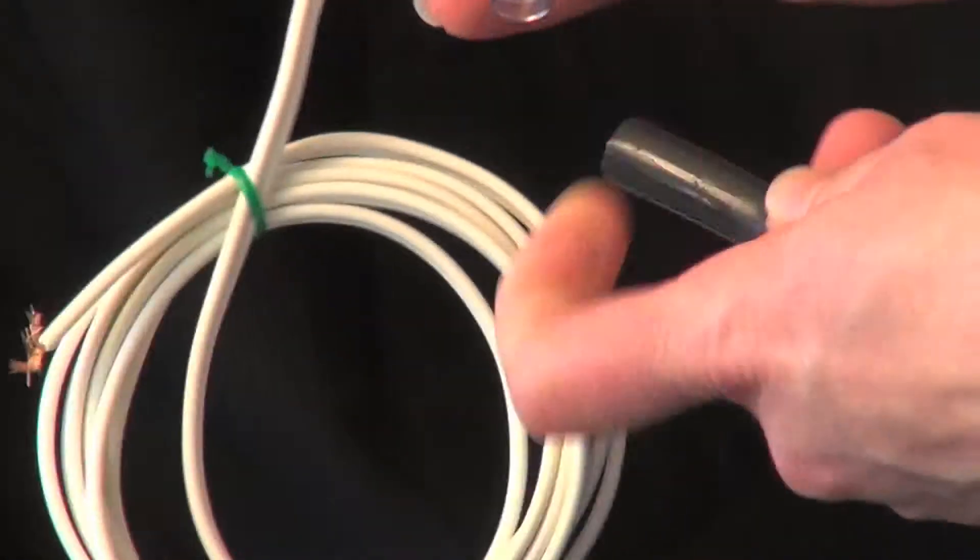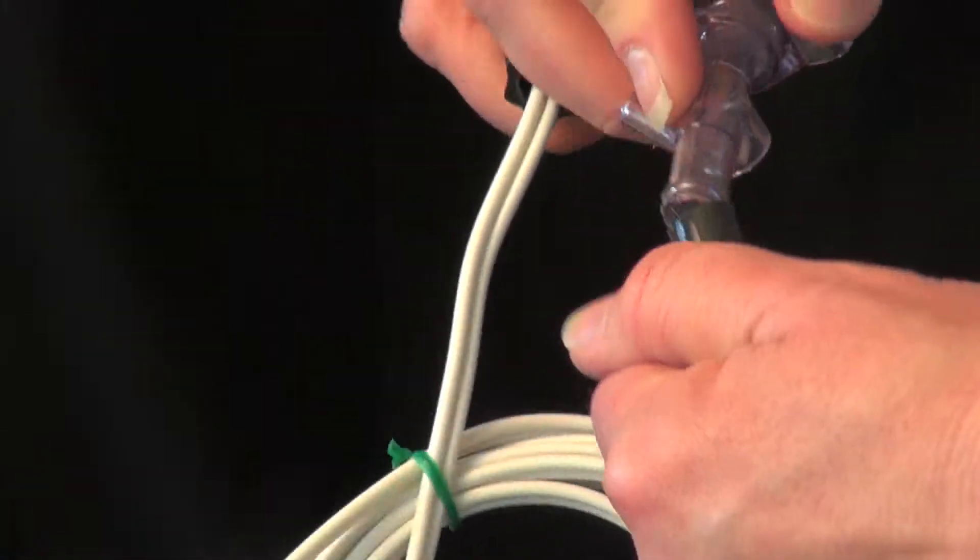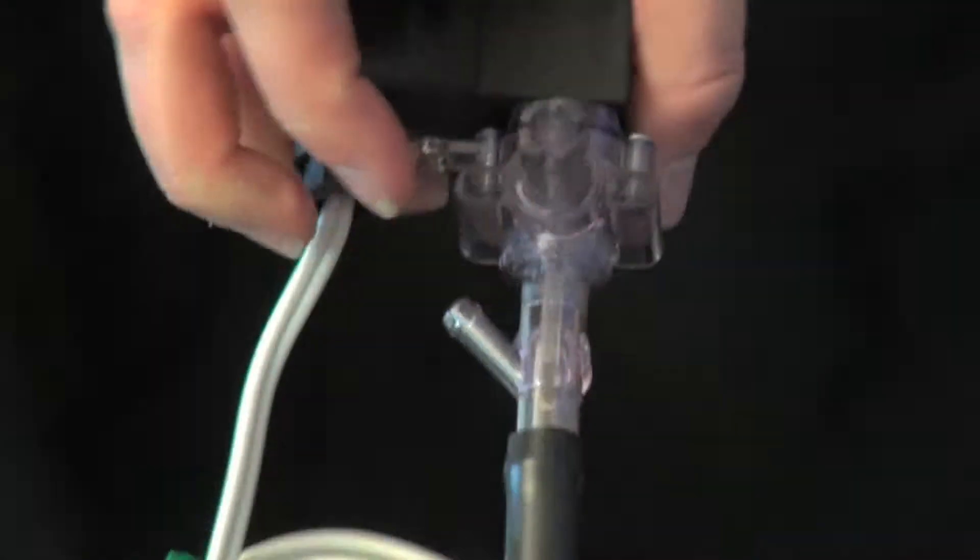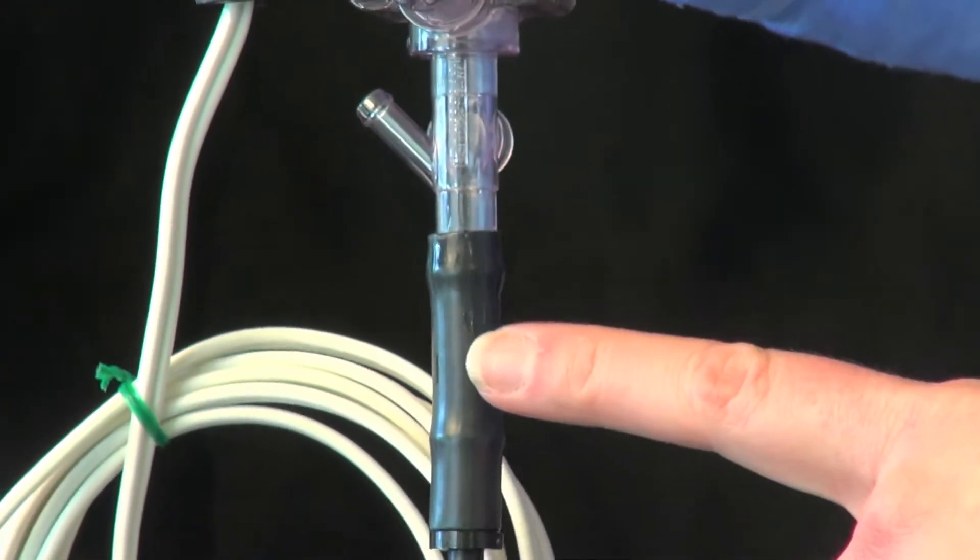So once you dip it in the warm soapy water, then you can attach it to the bottom of the solenoid. Now this can be a tight fit, so you have to work it in. Once you get it on, it'll form a nice tight seal and you won't have any leaks.